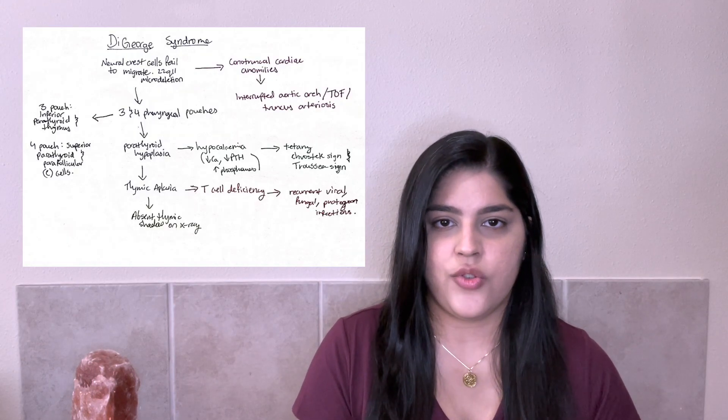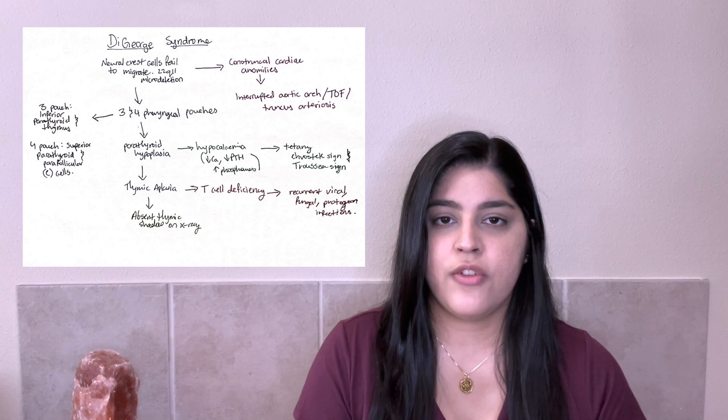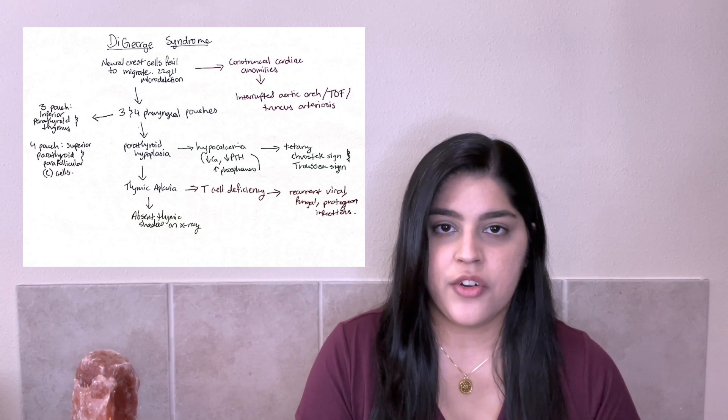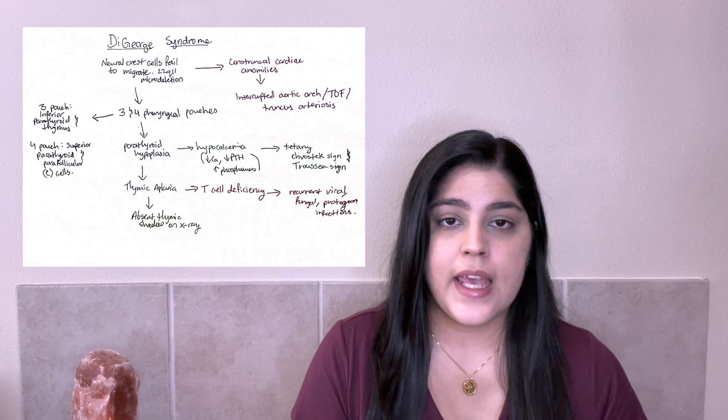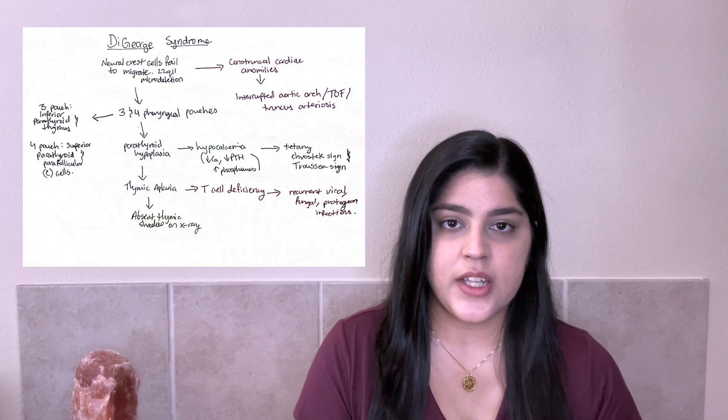The second flowchart is on DiGeorge syndrome. These immunodeficiencies are something I had to put a little more time into because there are so many things that play into each one. DiGeorge is definitely one of the most important ones to know for Step 1, so that's why I decided to include this flowchart. You'll see different colors in the flowchart because I bring in different subjects. DiGeorge syndrome is due to failure of the neural crest cells to migrate, and you'll also see a 22q11 microdeletion.